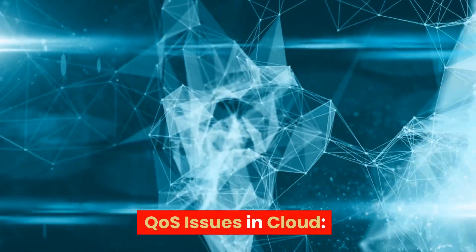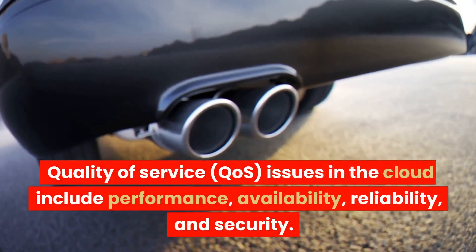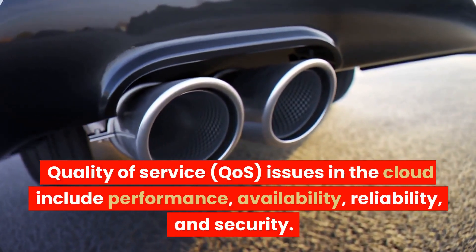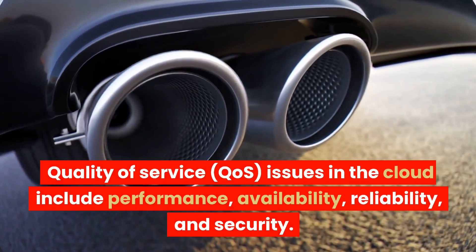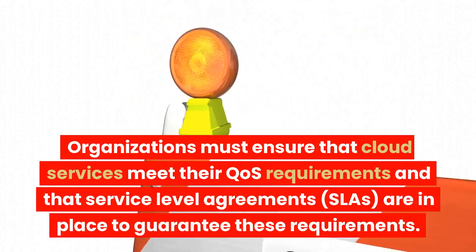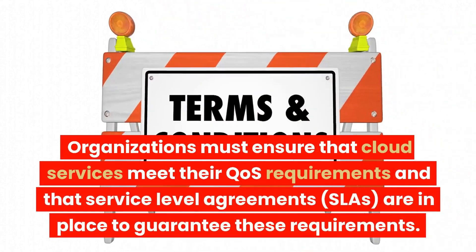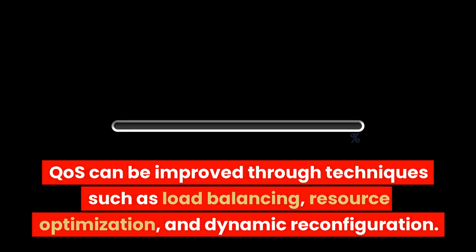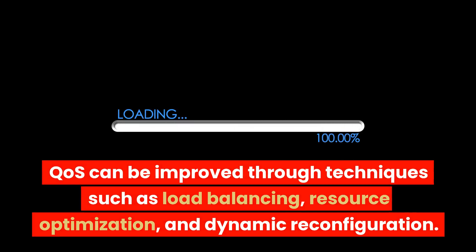Quality of Service (QoS) issues in the cloud include performance, availability, reliability, and security. Organizations must ensure that cloud services meet their QoS requirements and that service-level agreements (SLAs) are in place to guarantee these requirements. QoS can be improved through techniques such as load balancing, resource optimization, and dynamic reconfiguration.